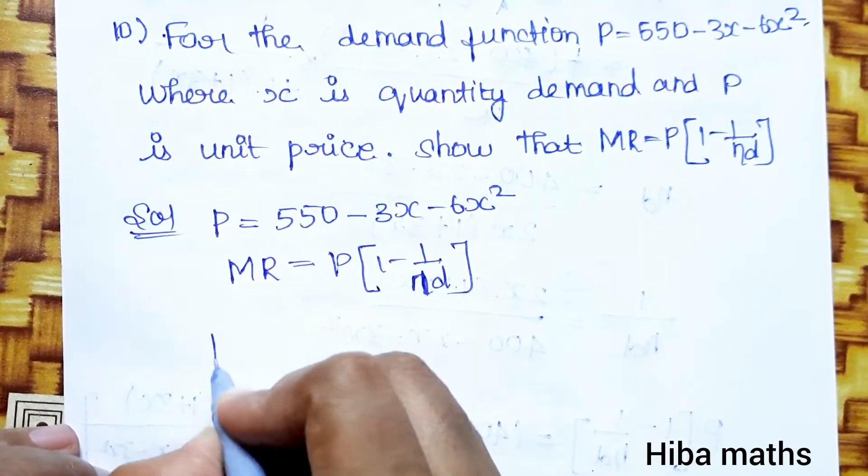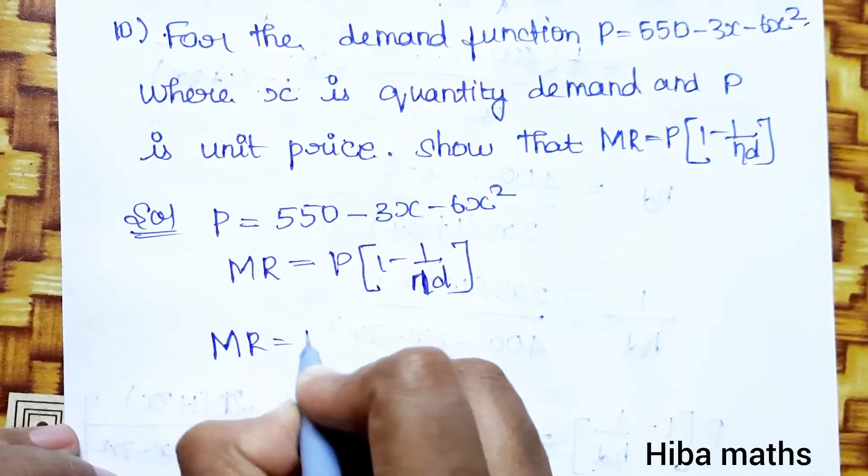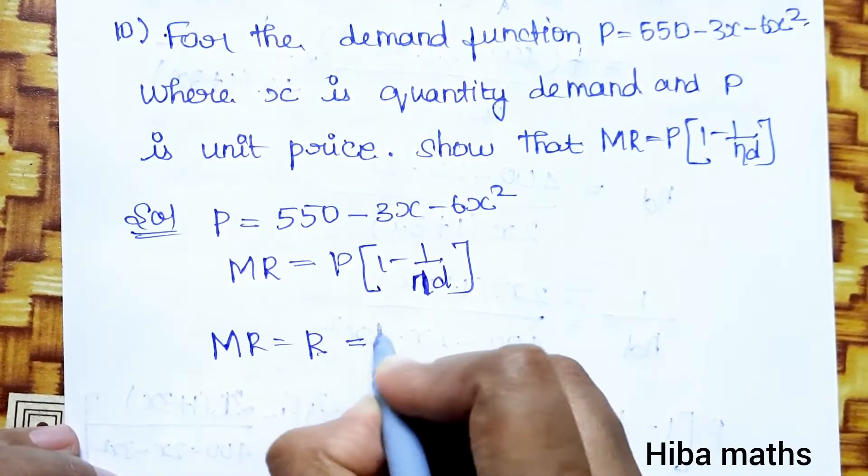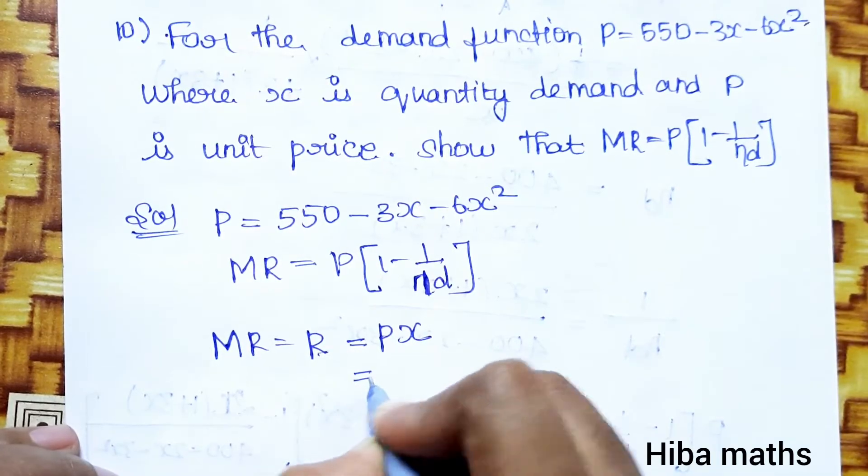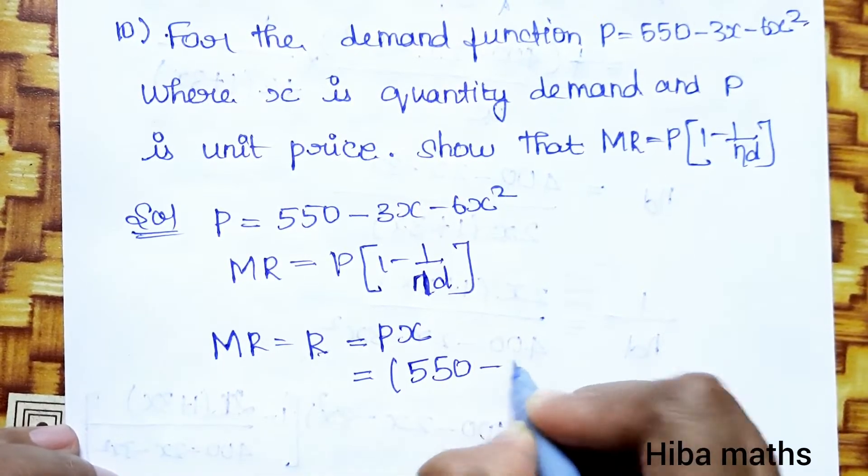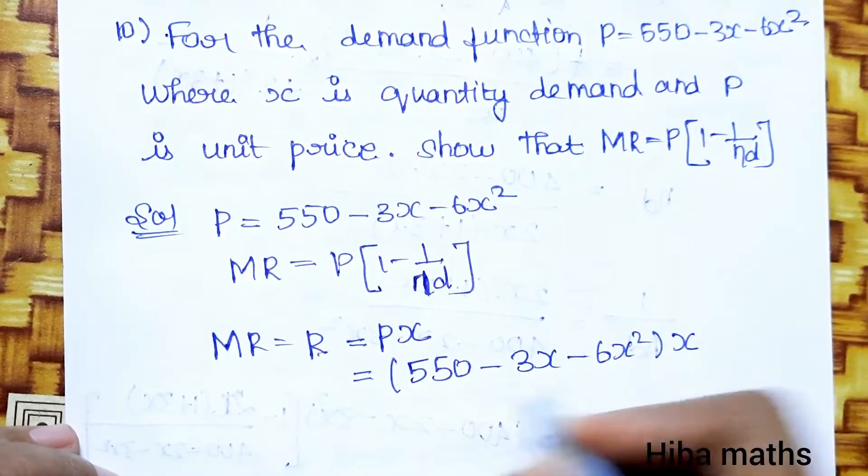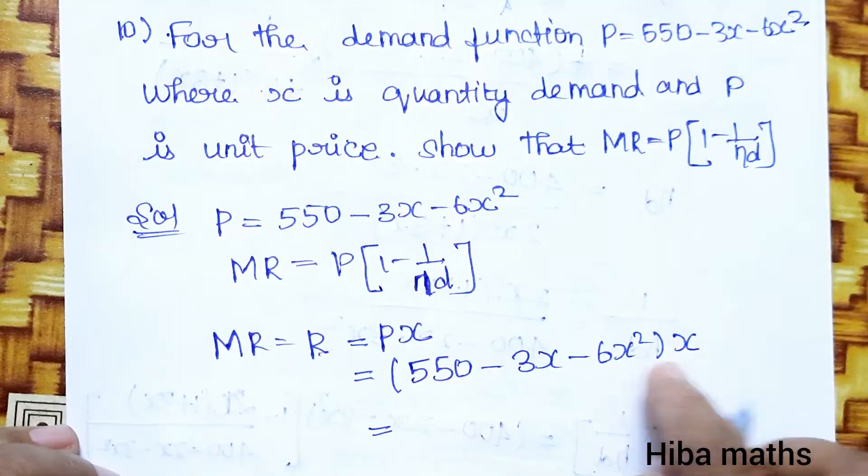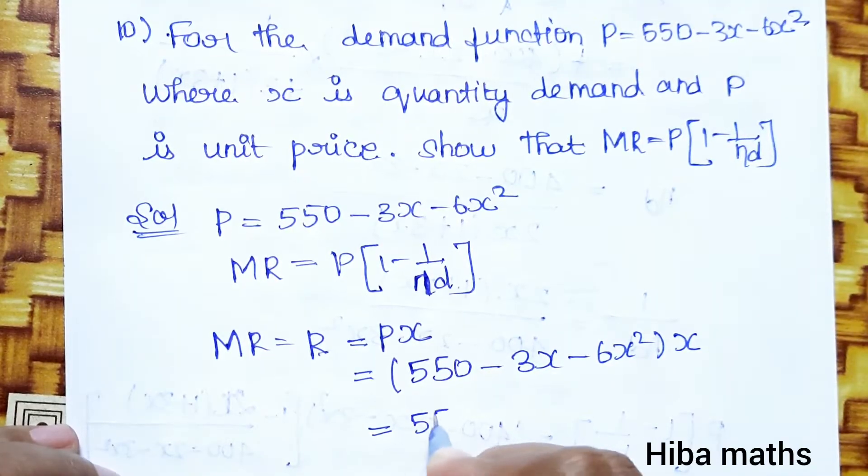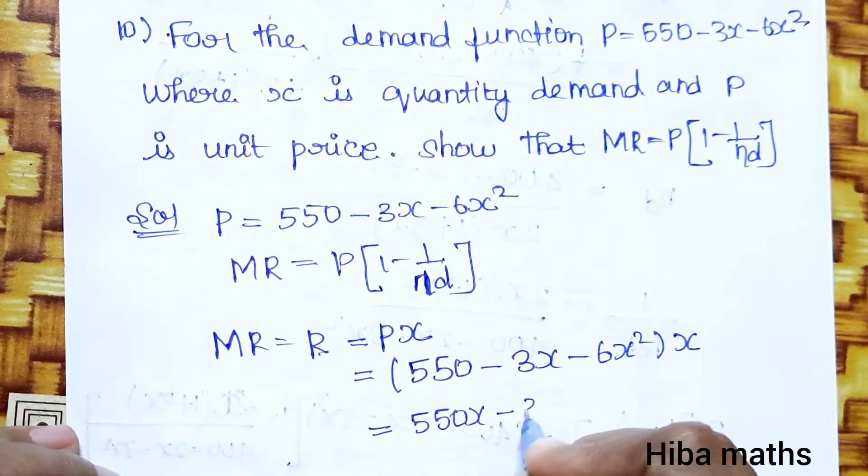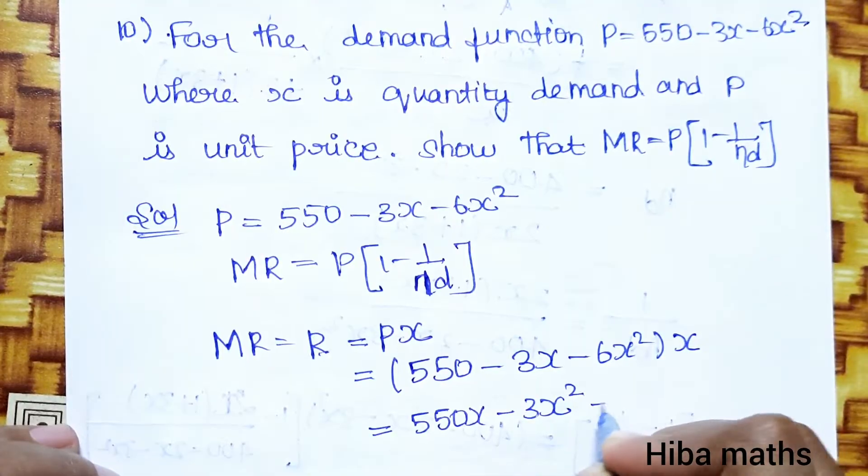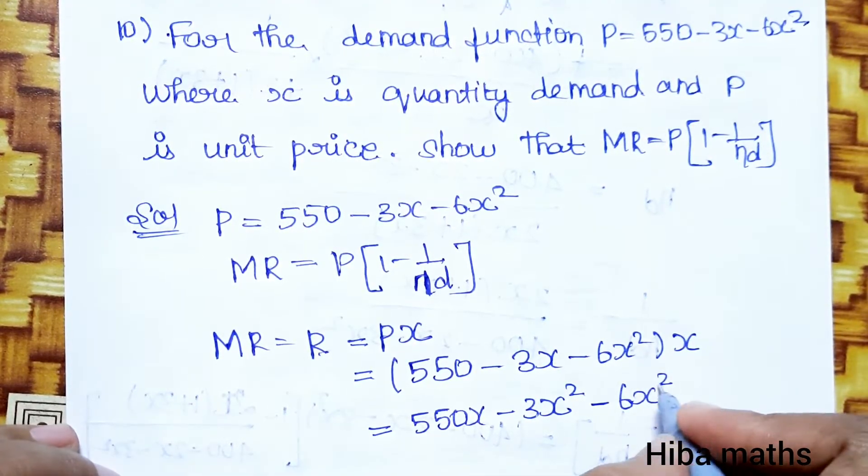P is equal to 550 minus 3x minus 6x square. So R equals P into x. If we multiply this, R equals 550x minus 3x square minus 6x cube.